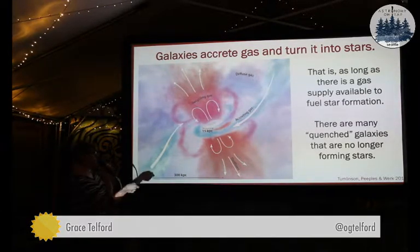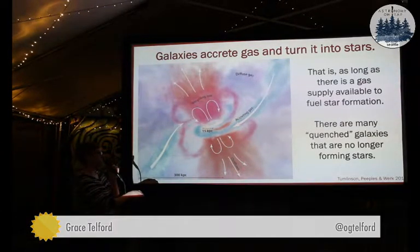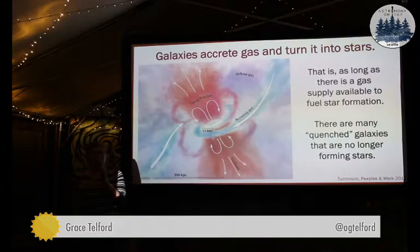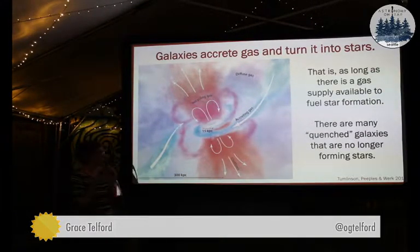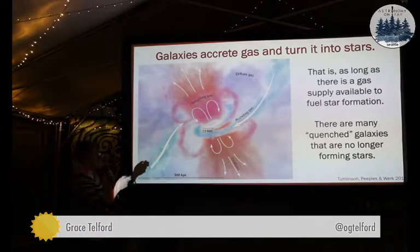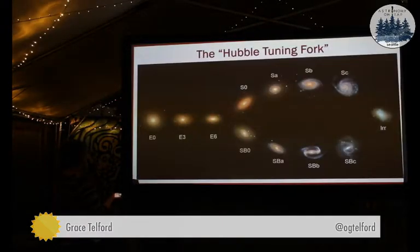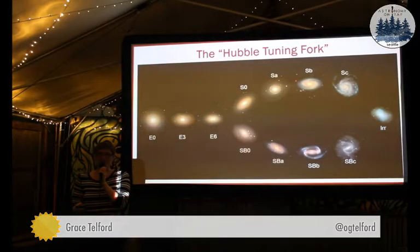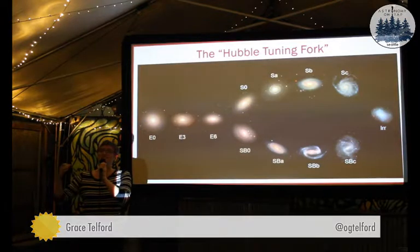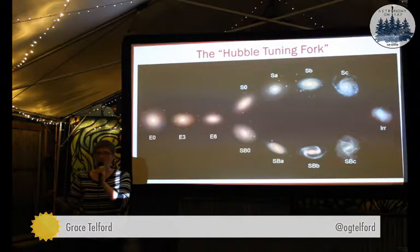All these processes of star formation and the associated gas flows will continue as long as there is a gas supply available to fuel star formation. We actually see a lot of galaxies in the universe that are quenched — which is astronomer speak for no longer forming stars. We also call them red and dead. We'll circle back to this in a moment.